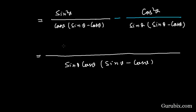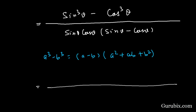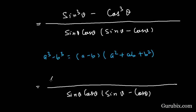The numerator is sin cubed θ minus cos cubed θ. We shall expand this using the identity a³ minus b³ = (a minus b)(a² + ab + b²). So we factorize sin³θ minus cos³θ as (sin θ minus cos θ) times (sin²θ + sin θ·cos θ + cos²θ).